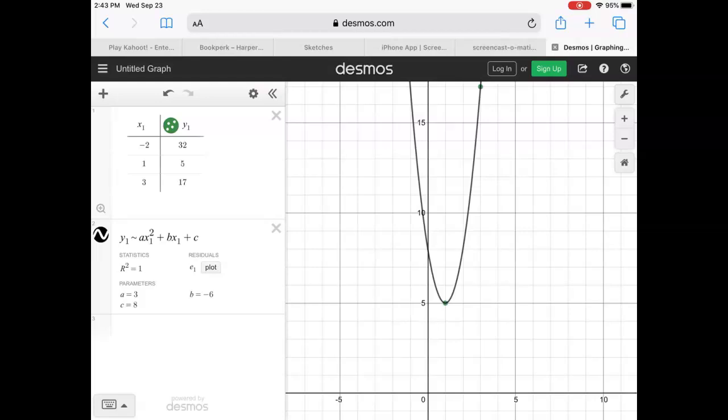So what it did is it took our table that we inputted and it found the a, b, and c that fit that quadratic regression.